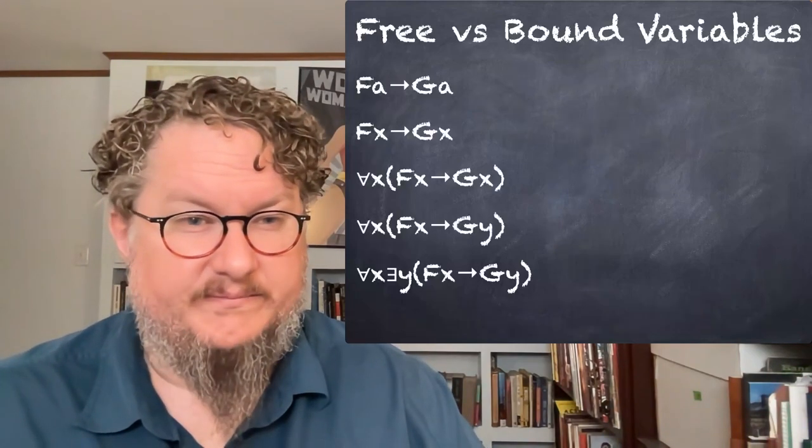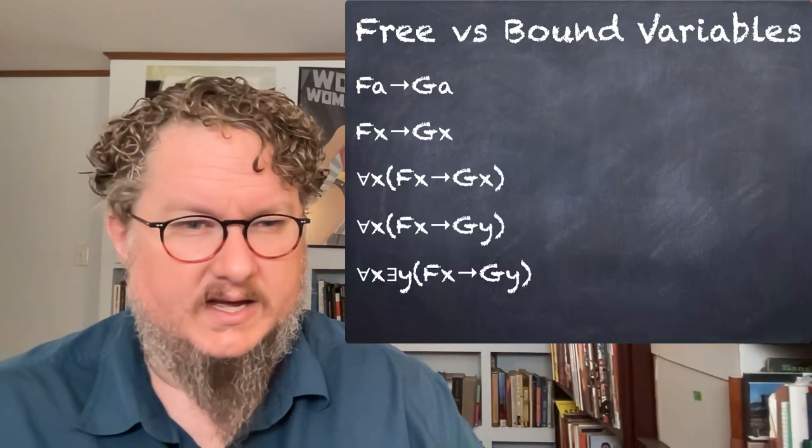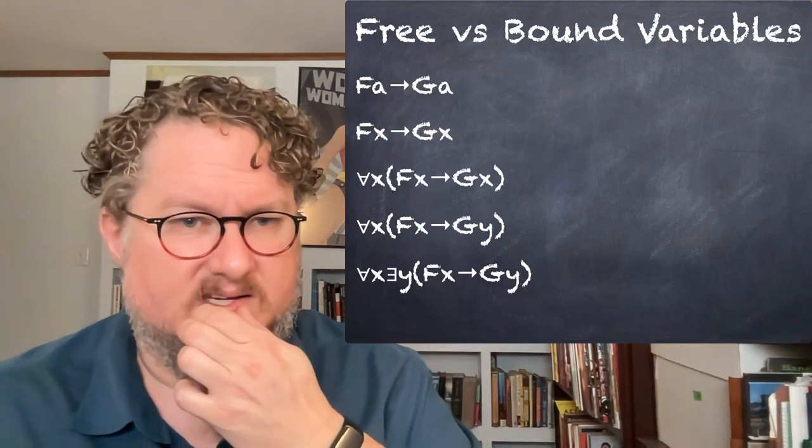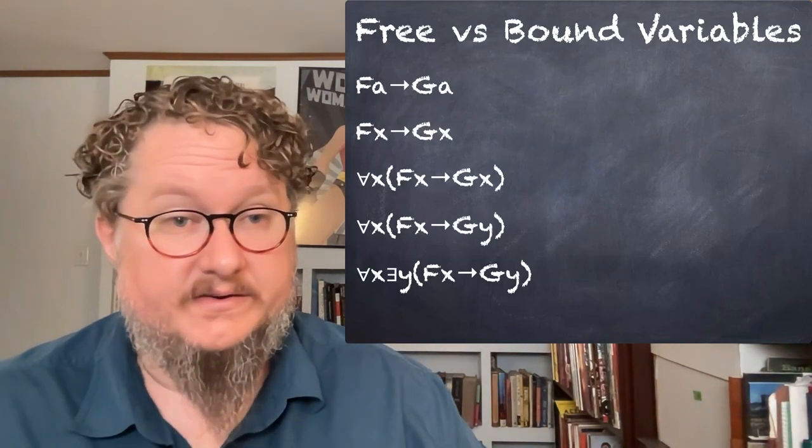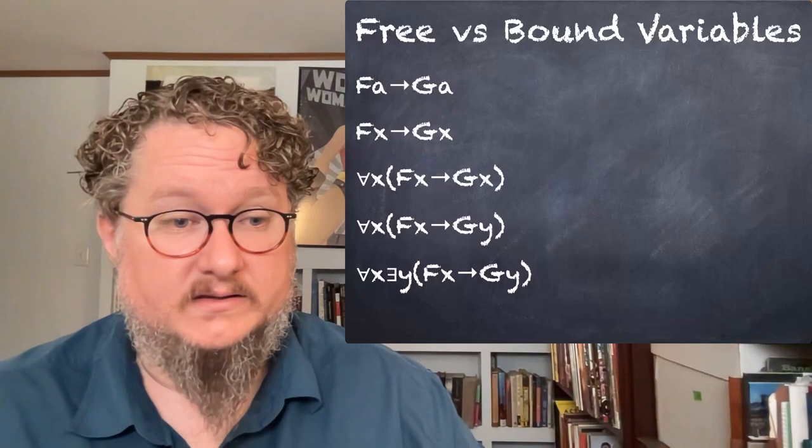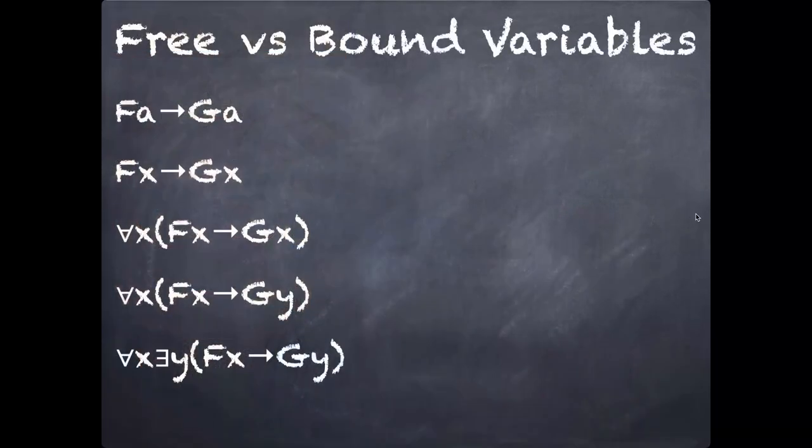So this notion of free and bound variables may be a little unclear. So let's look at some examples here. These are just various expressions in QL. So let's look a little bit more closely here. This first sentence, Fa then Ga, a is a constant, not a variable. So there are no variables, and so there are no free variables. If Fx then Gx, x is a variable, but there's no quantifier here. So the x is a free variable.